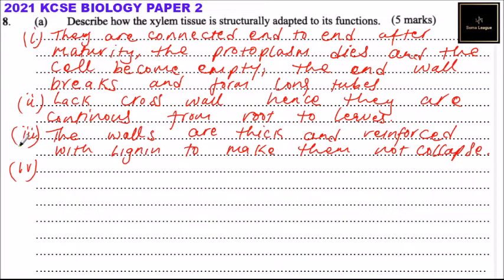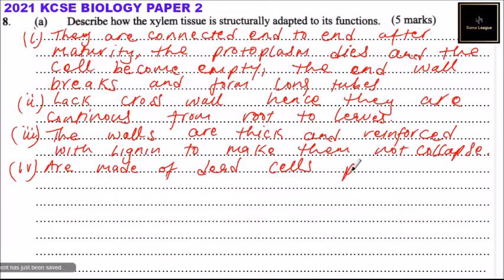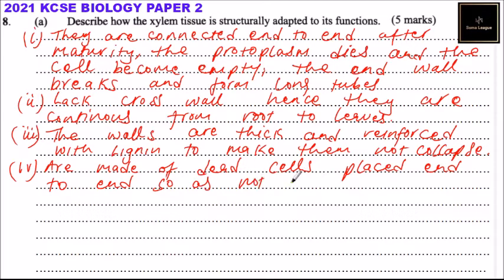Another adaptation is that xylem vessels are made of dead cells pressed end to end, so that they do not absorb the water they are transporting.